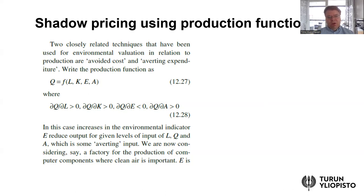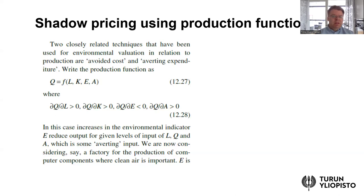The idea comes from the standard production function, where output quantity Q is a function of labor and capital inputs. We might also include additional variables: E could be an environmental indicator or energy consumption, and A is an averting or abatement input. If we estimate the production function, we obtain marginal products — not only for labor and capital, but also for the environmental input and for abatement input. These marginal products can be positive or negative, reflecting potential trade-offs between good output and bad output.